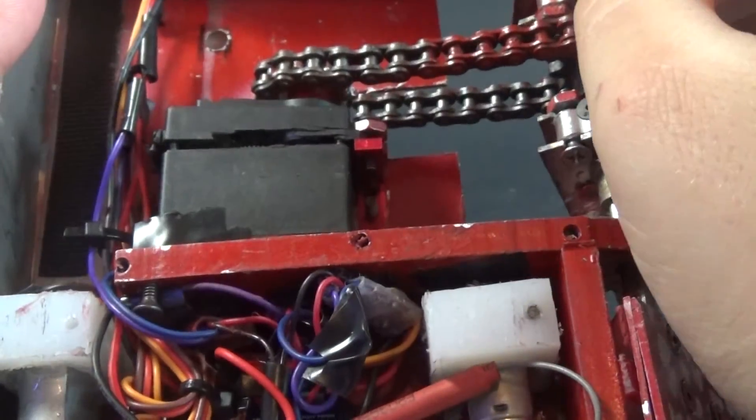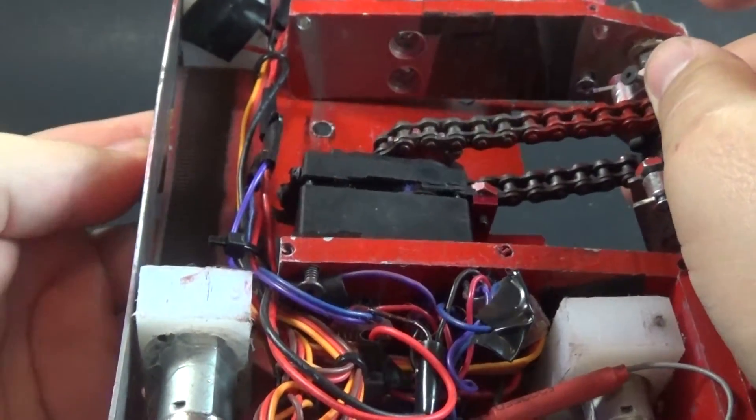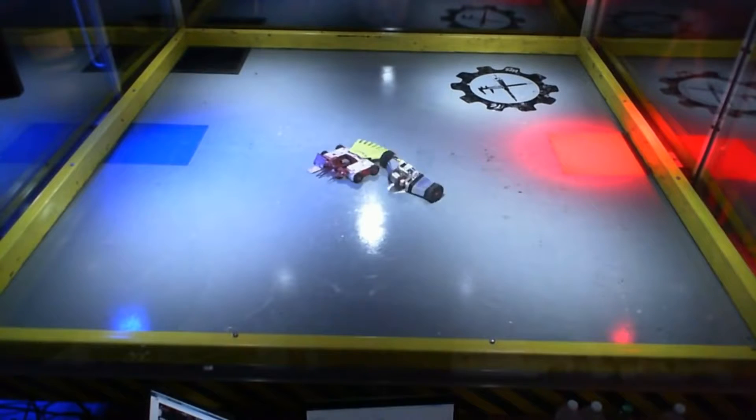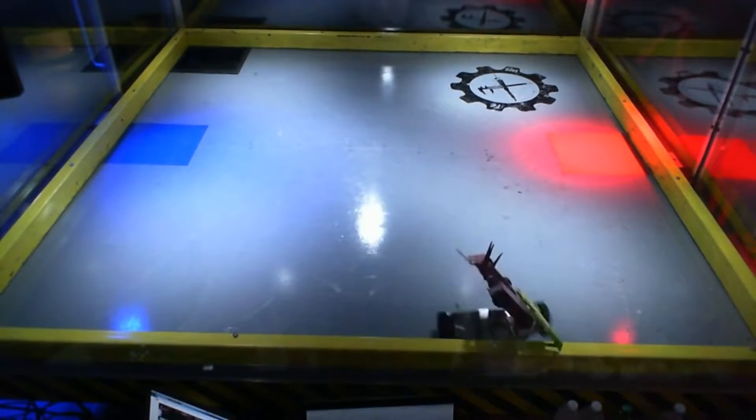And he actually caught my battery cables somehow and ripped them straight out of the battery. Which was awesome. And that's what did Gorgor in this fight. Without battery connection, of course there was no way it was going to keep going. It was a pretty quick and pretty spectacular knockout.